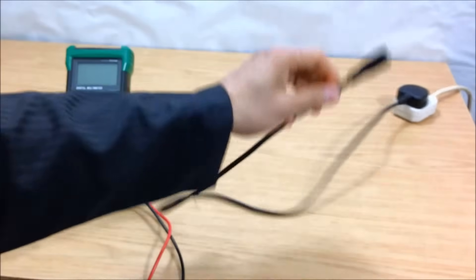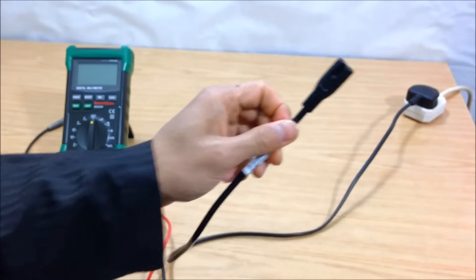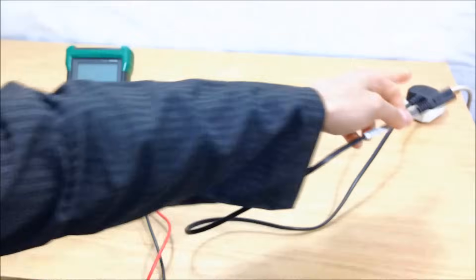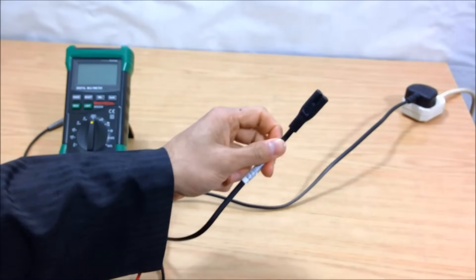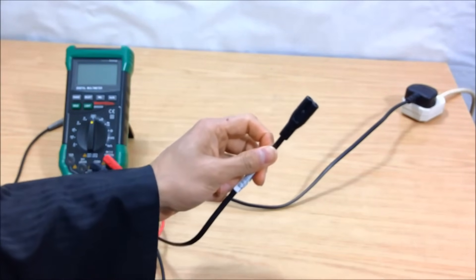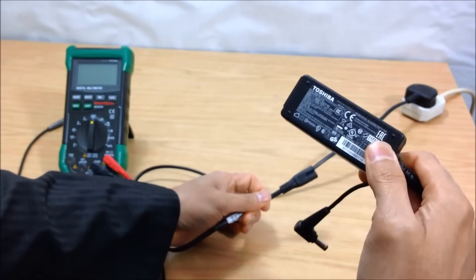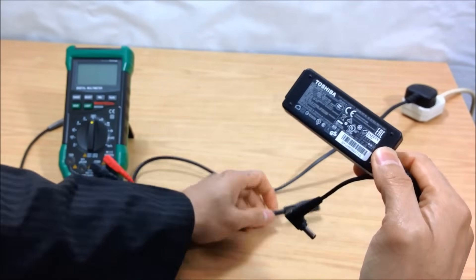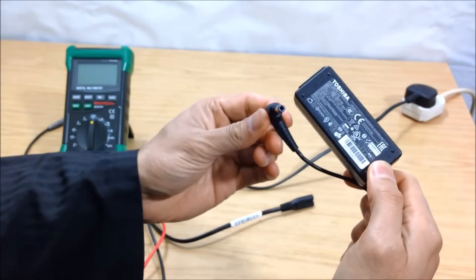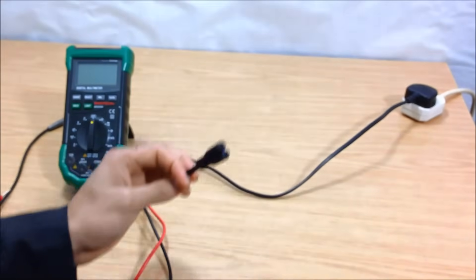It means it takes 240V from the mains socket as AC, alternating current, and converts it to a more sensible DC, which is direct current, of 19V into your laptop.